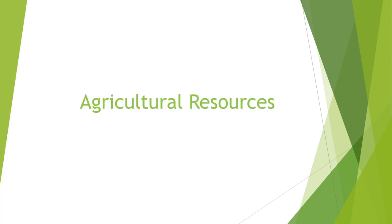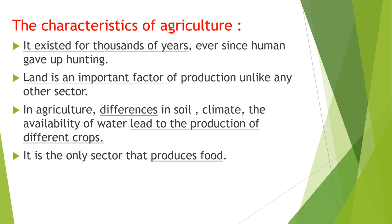The second part of resources is agricultural resources. Agriculture has existed for thousands of years, even since humans gave up hunting. Land is an important factor in producing agricultural products, unlike any other sector. In agriculture, differences in soil, climate, or availability of water lead to the production of different crops. It is the only sector that produces food, which is directly related to food security.